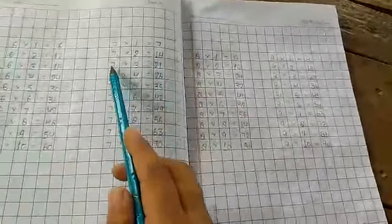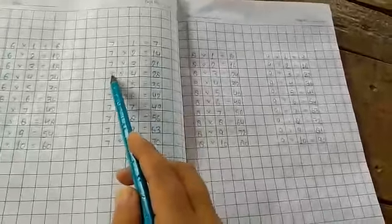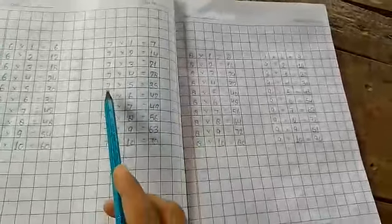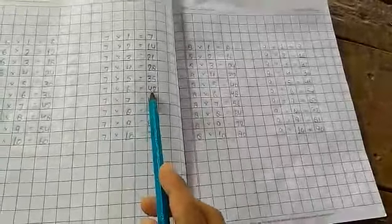7 1's are 7, 7 2's are 14, 7 3's are 21, 7 4's are 28, 7 5's are 35, 7 6's are 42, 7 7's are 49, 7 8's are 56, 7 9's are 63, 7 10's are 70.